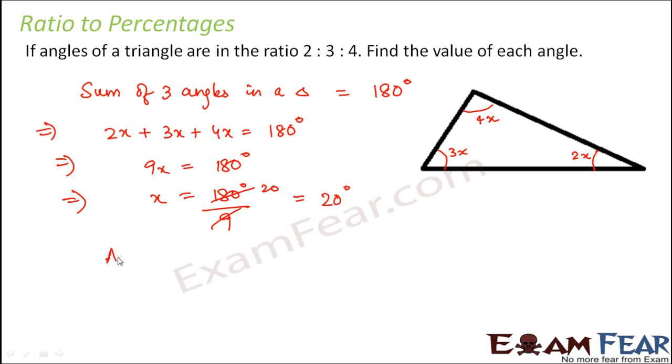Therefore what would be the angles? So the value of the angles would be 2x that is 2 into 20 degree which is 40 degree. 3x which is 3 into 20 degree which is 60 degree. And 4x which is 4 into 20 that is 80 degree. So the three angles of the triangles would be 40 degree, 60 degree and 80 degree respectively.